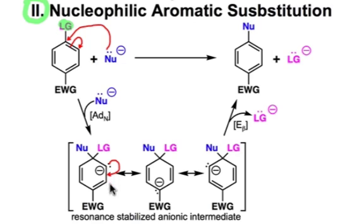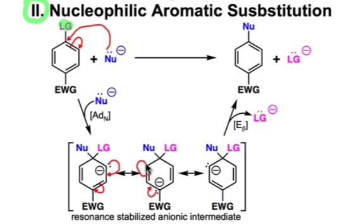This is resonance stabilized, so we can continue to move the electron pair associated with that negative charge, positioning it right next to the electron-withdrawing group. Depending upon the structure of this electron-withdrawing group, there's another important resonance contributor in which there's a non-bonding pair of electrons on this carbon atom donating into the π-system of this electron-withdrawing group. Finally, we have one more resonance description that puts the negative charge on this position.